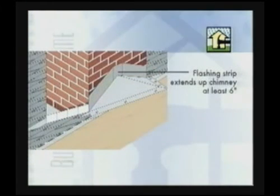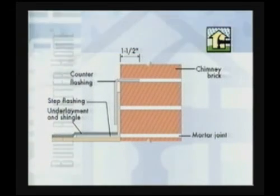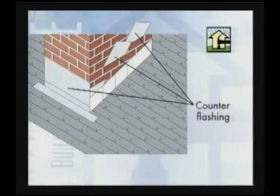Cut a flashing strip to the contour of the ridge in the cricket and extend at least six inches up the chimney. The previously installed counter flashing laps over the step and cricket flashing. Shingle the remainder of the roof.